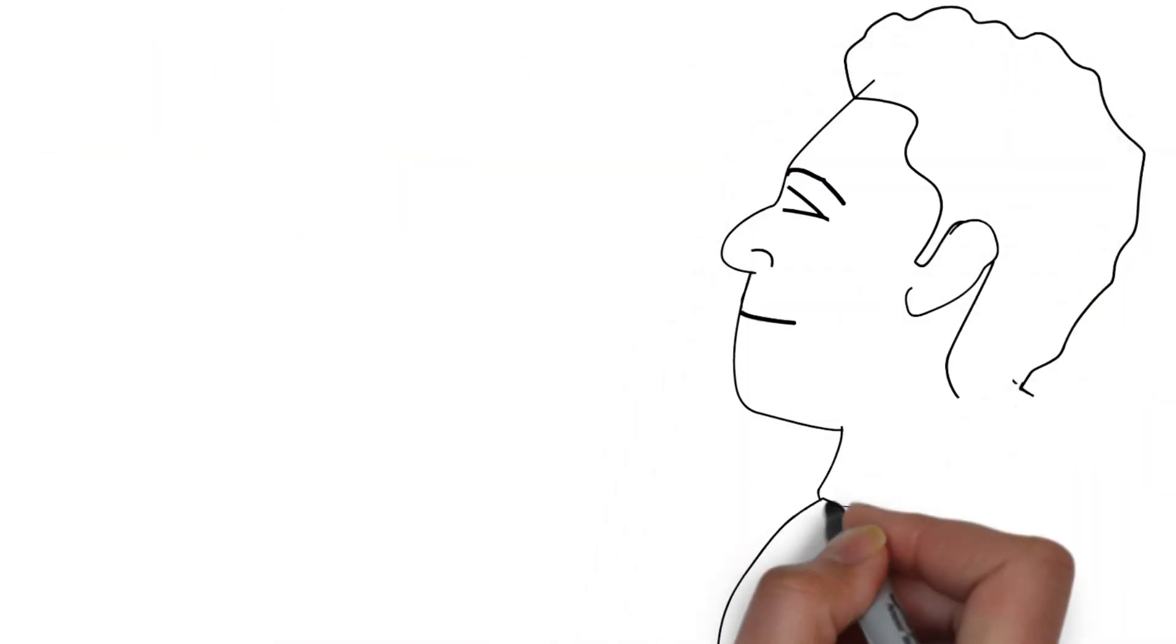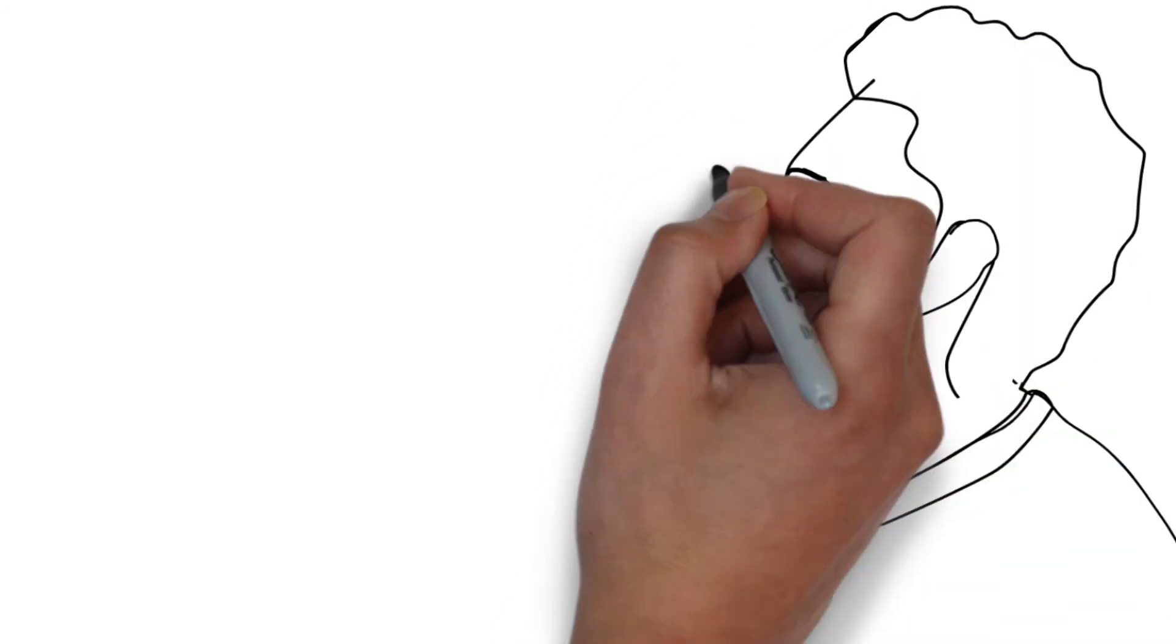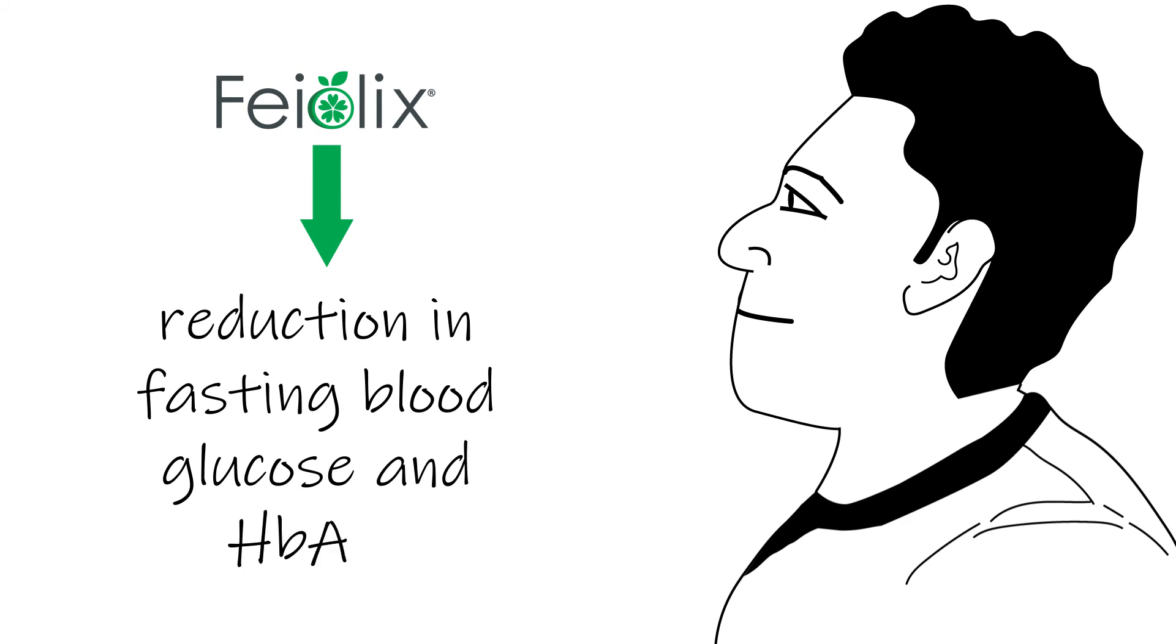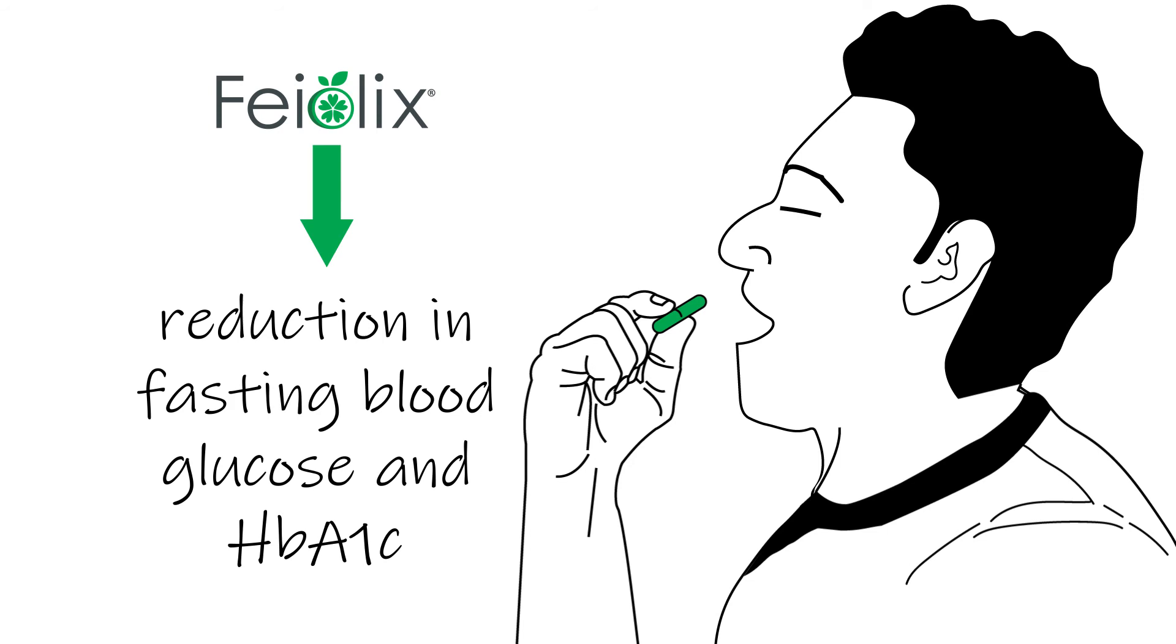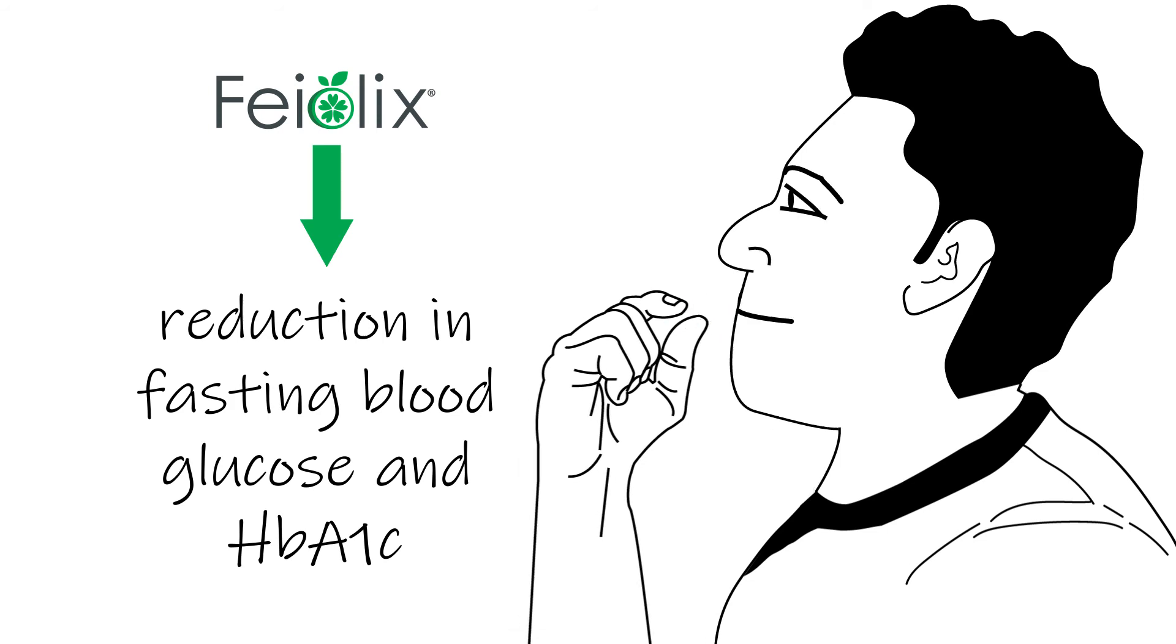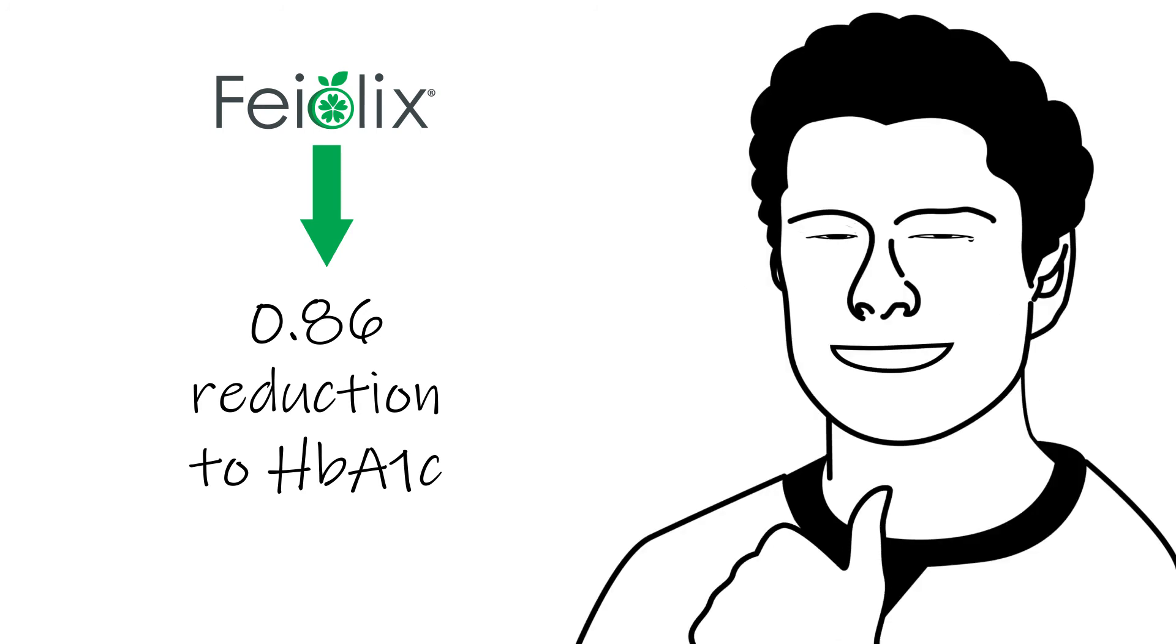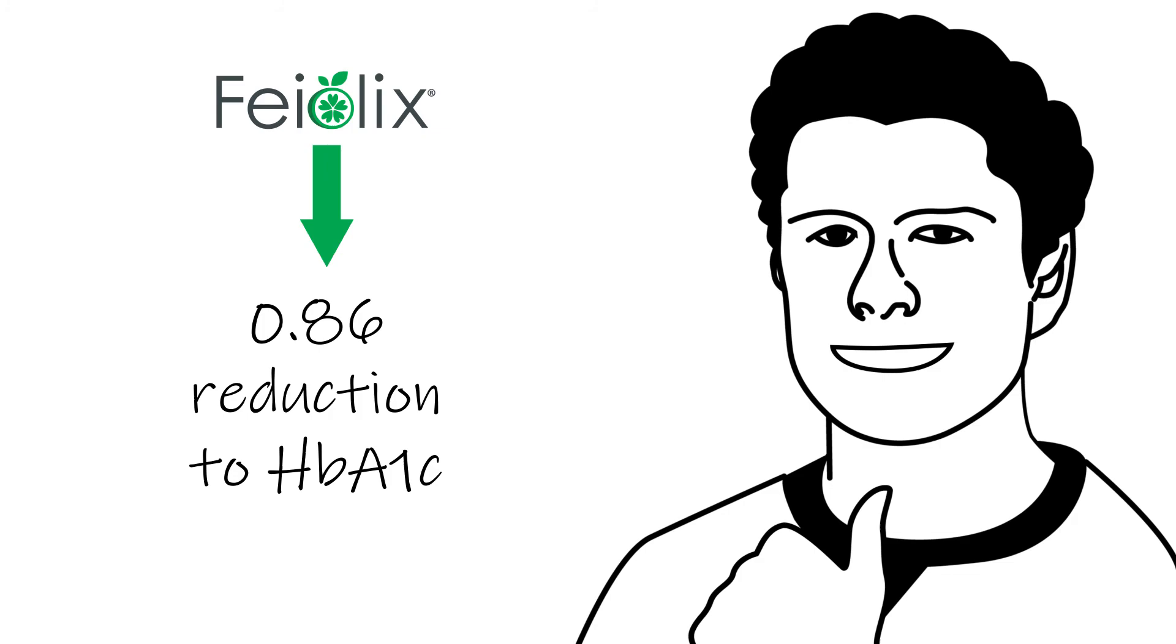Research conducted on Pheolix shows it has a positive effect on blood glucose levels. In a randomized, placebo-controlled study of type 2 diabetic patients, those taking Pheolix had significant decreases in fasting blood glucose and HbA1c. The magnitude of change seen with HbA1c, a decrease of 0.86% compared to placebo, is a clinically significant improvement.